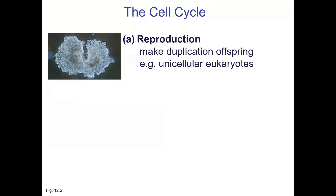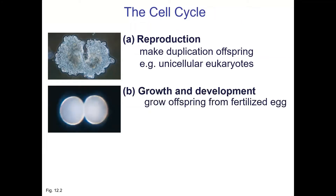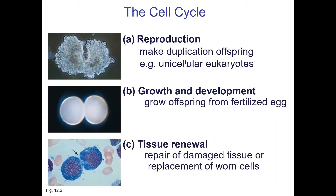Why do our cells need to divide? Part of it is reproduction — some organisms like amoeba reproduce this way, going from one cell to two daughter cells. This is a method of reproduction for many unicellular organisms. Why else? Growth and development — you all started off as one cell and now you're many cells, growing from one into trillions. And also tissue renewal — where we get damaged or worn-out cells. Our skin is constantly replacing itself, for example.